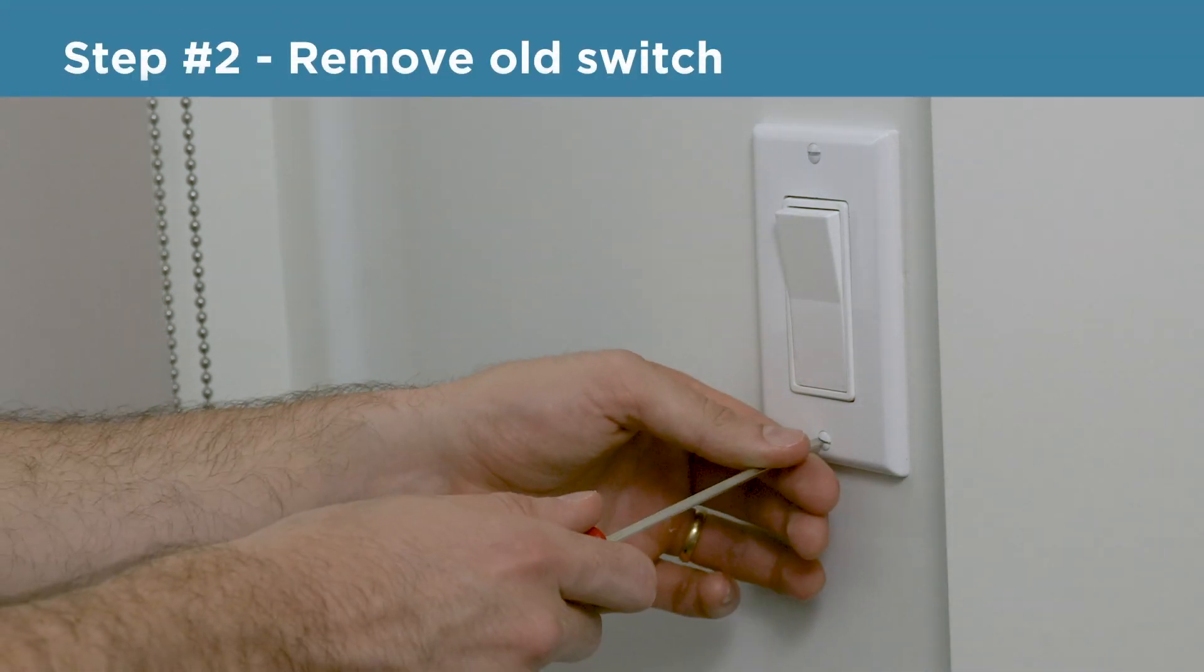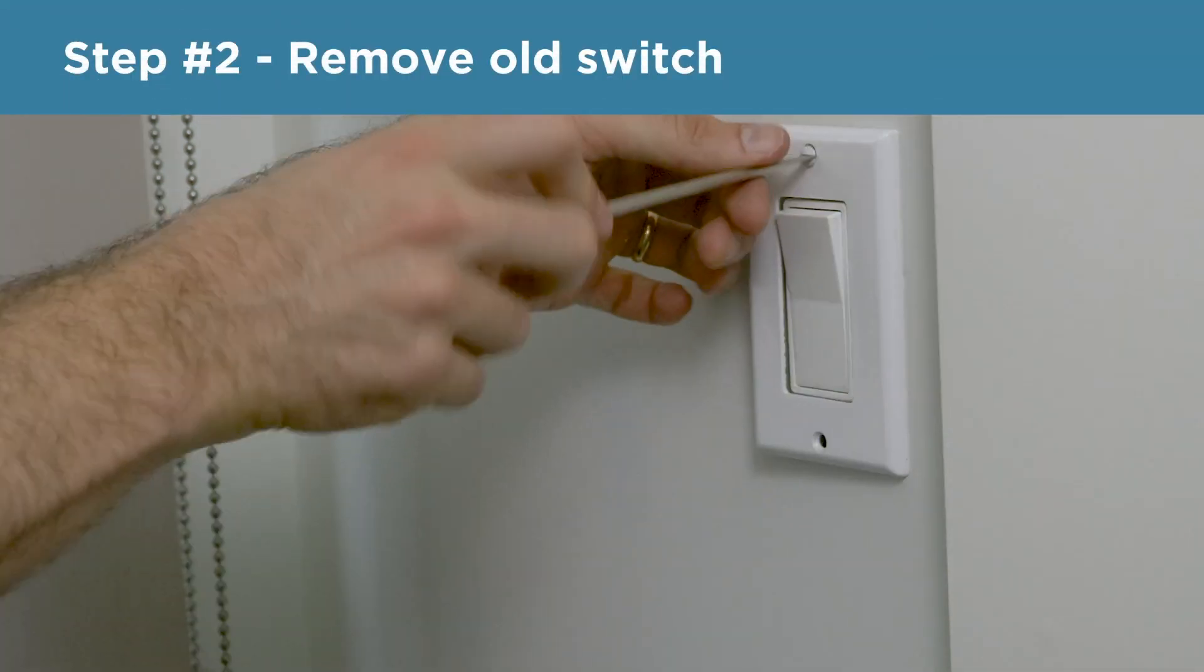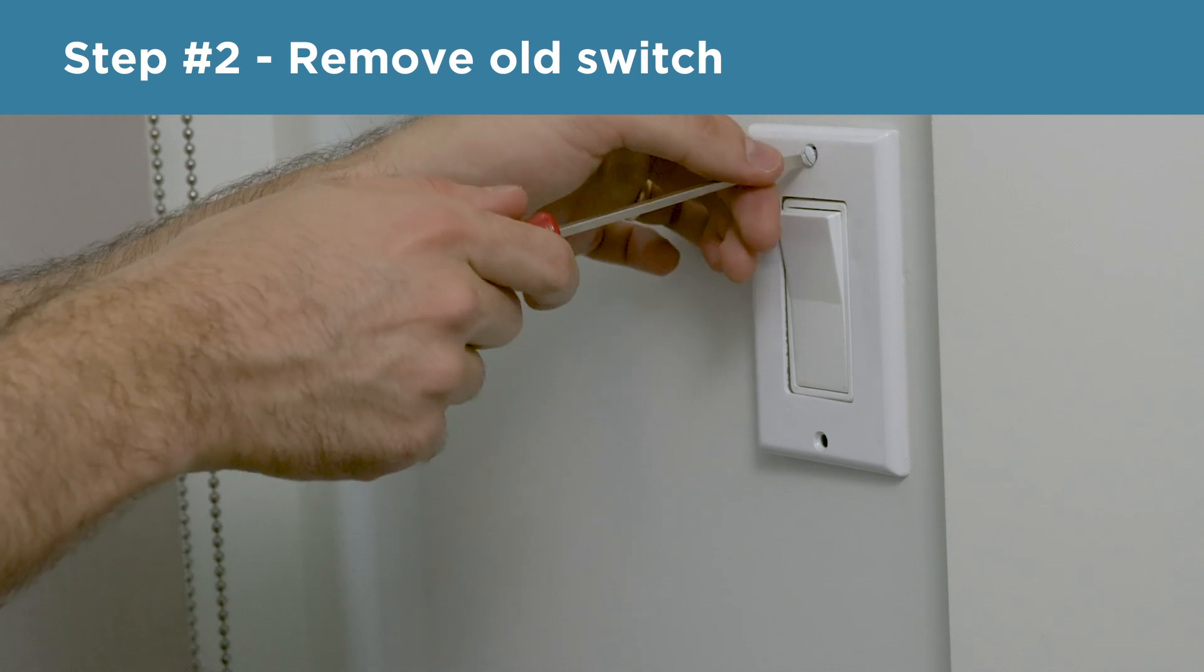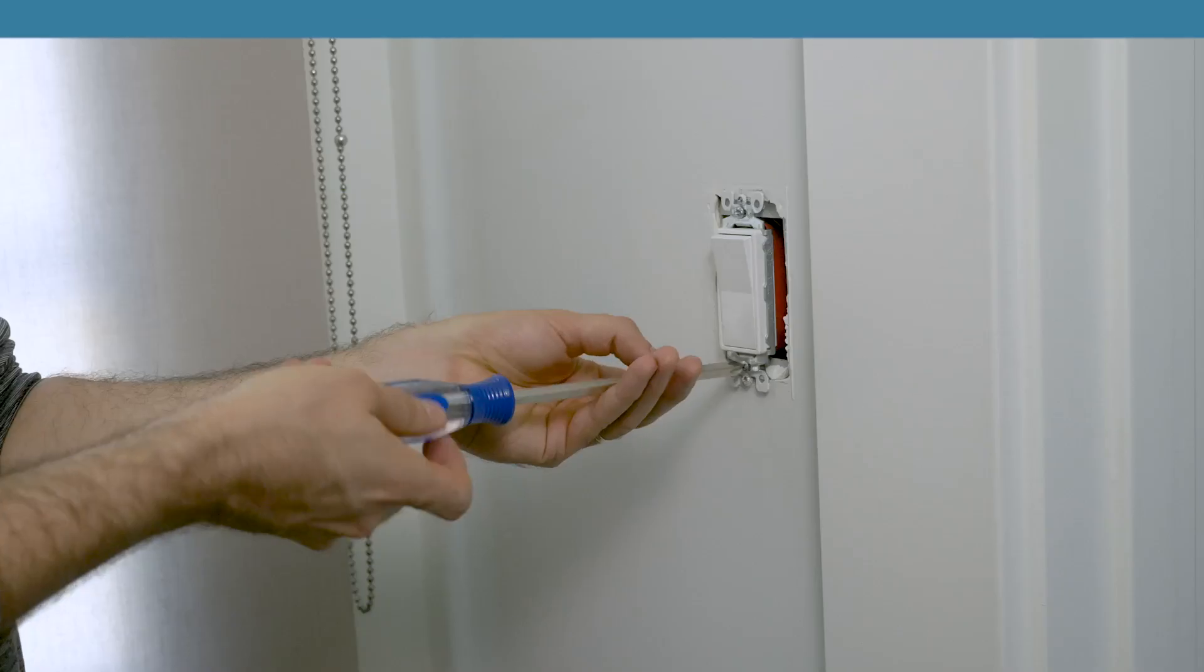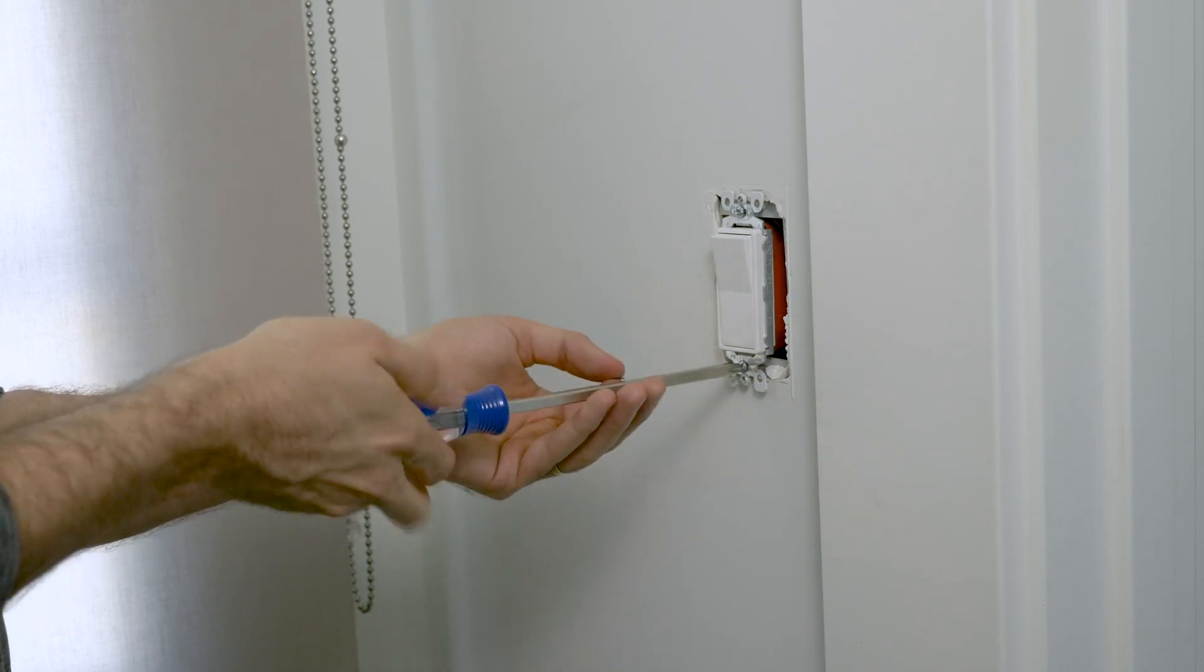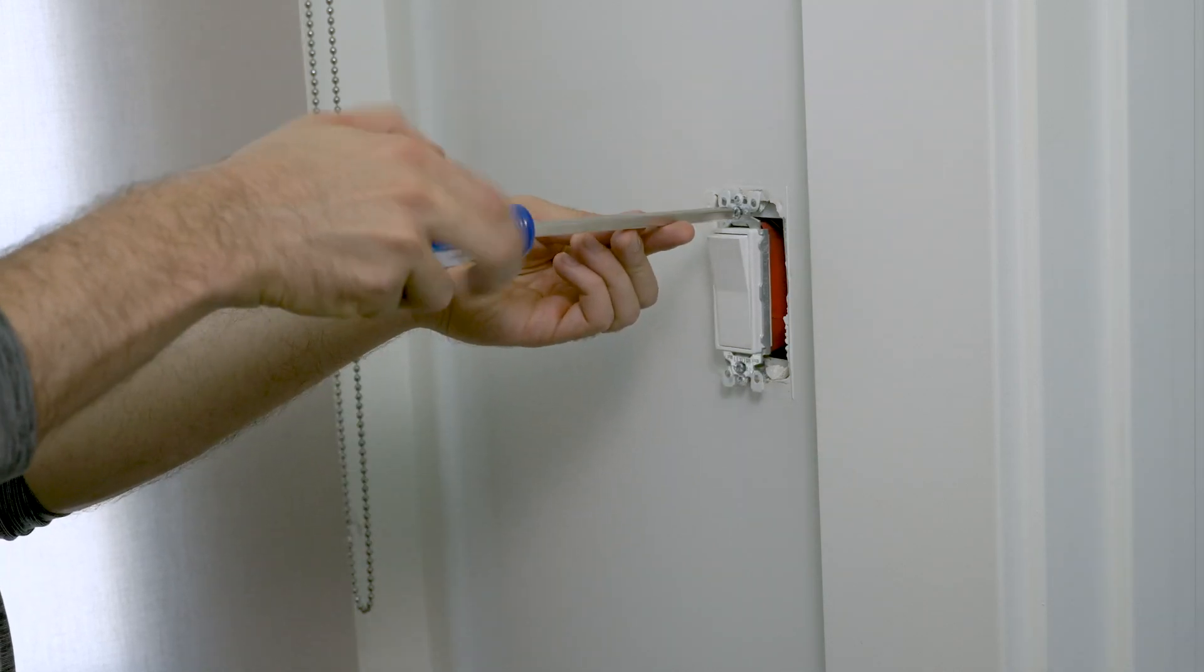Now, I'll use the flathead screwdriver to remove the switch cover. With the faceplate removed, I will now use the Phillips screwdriver to pull out the switch from the gang box.